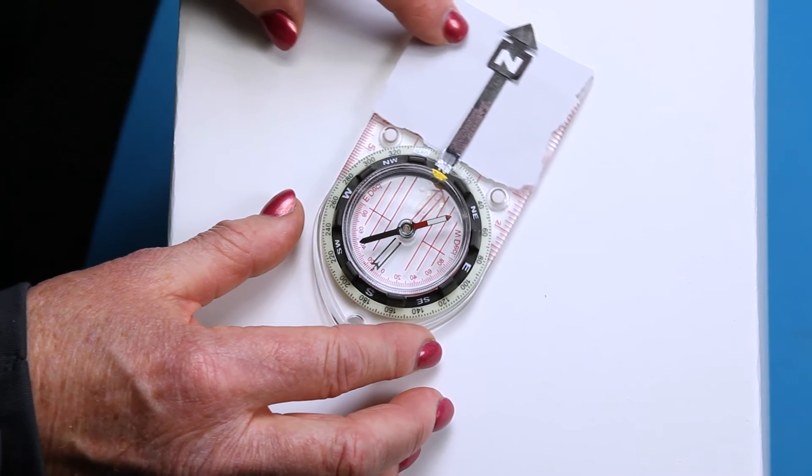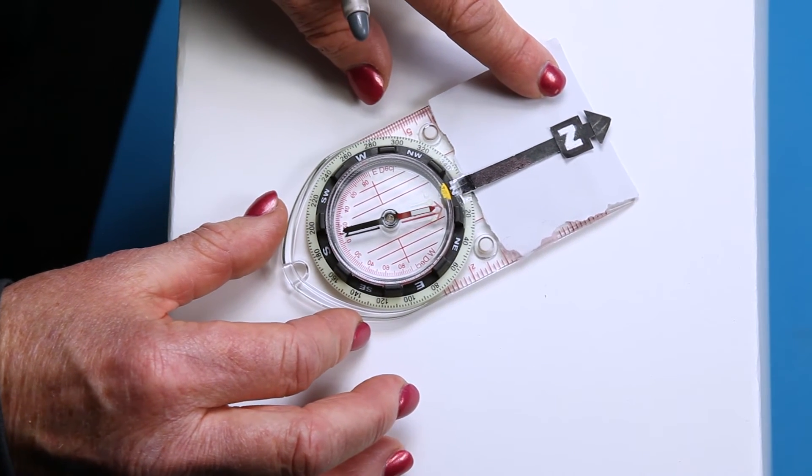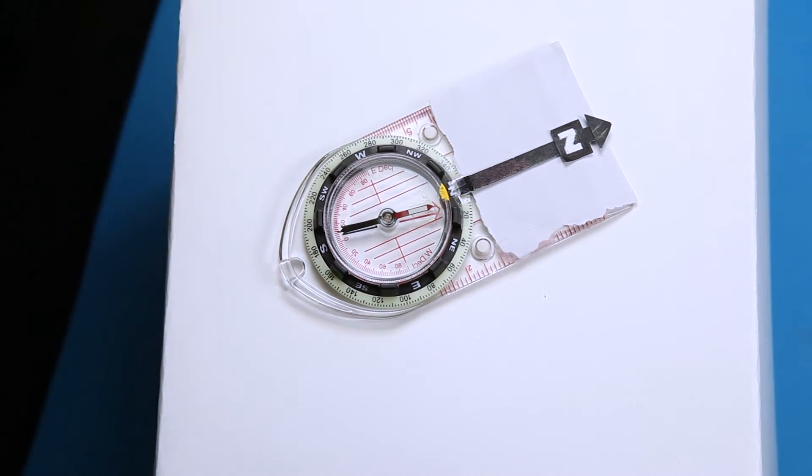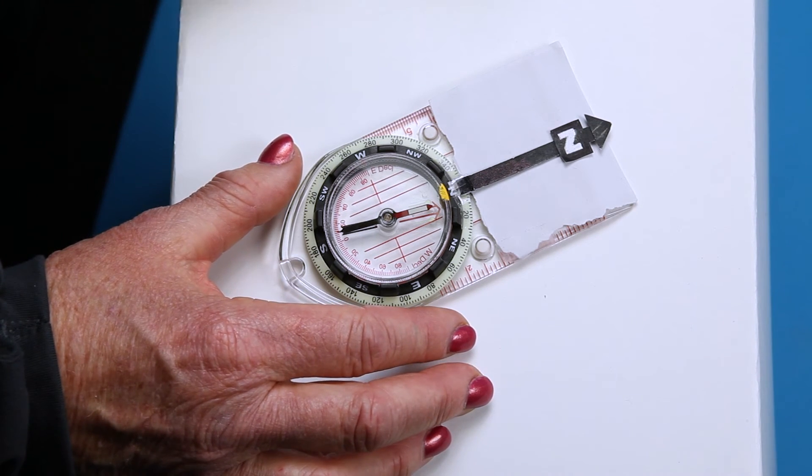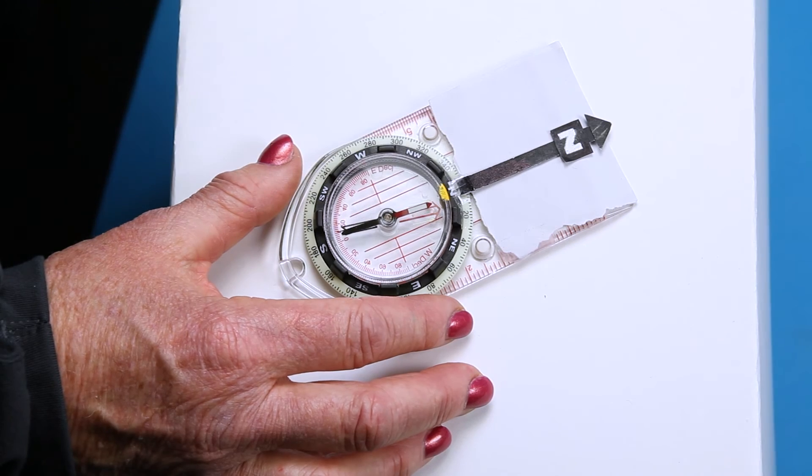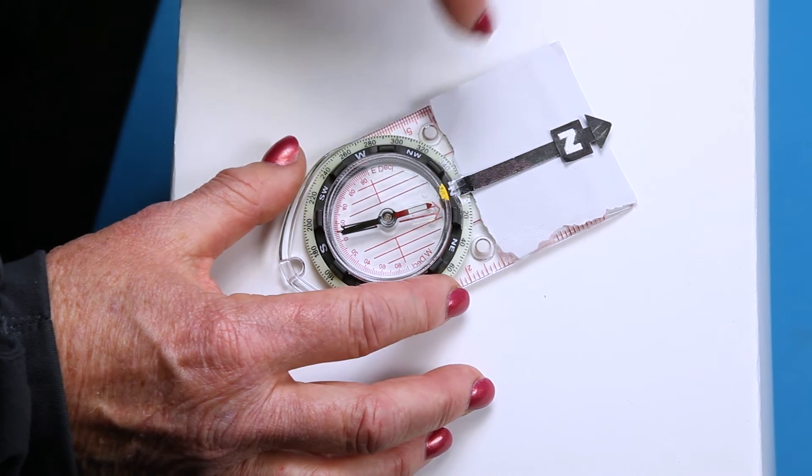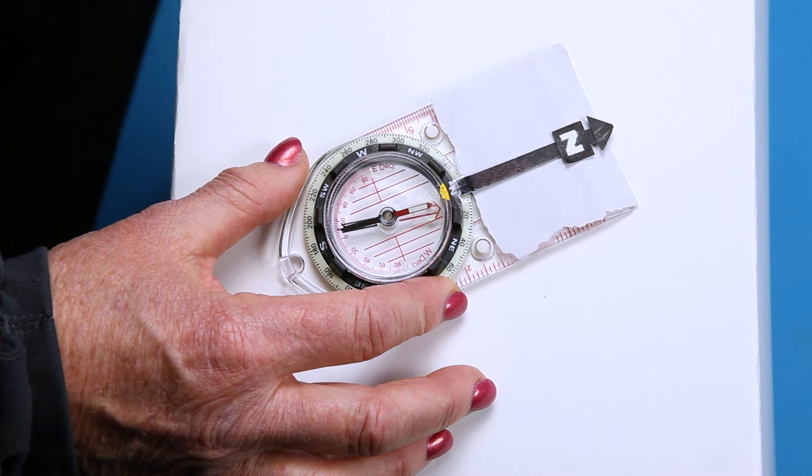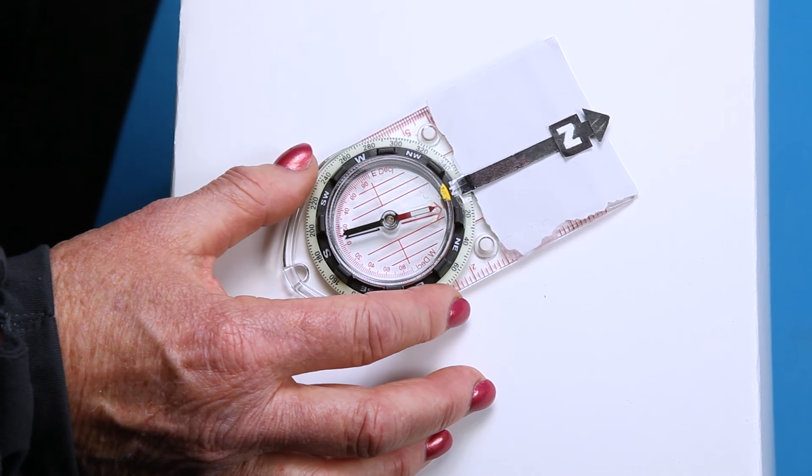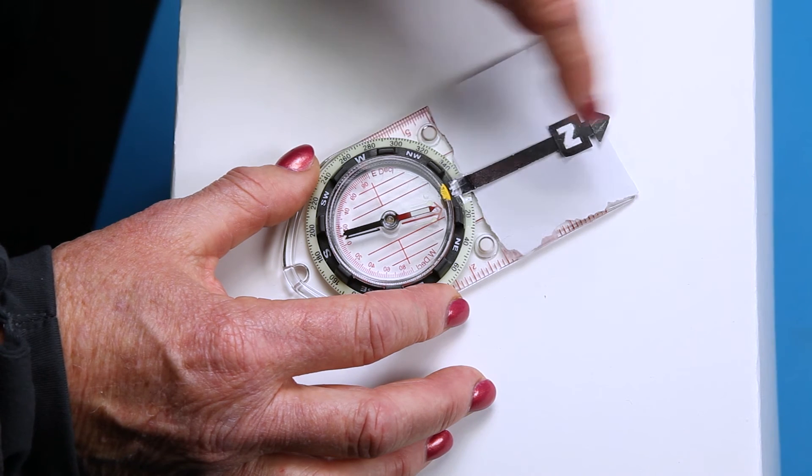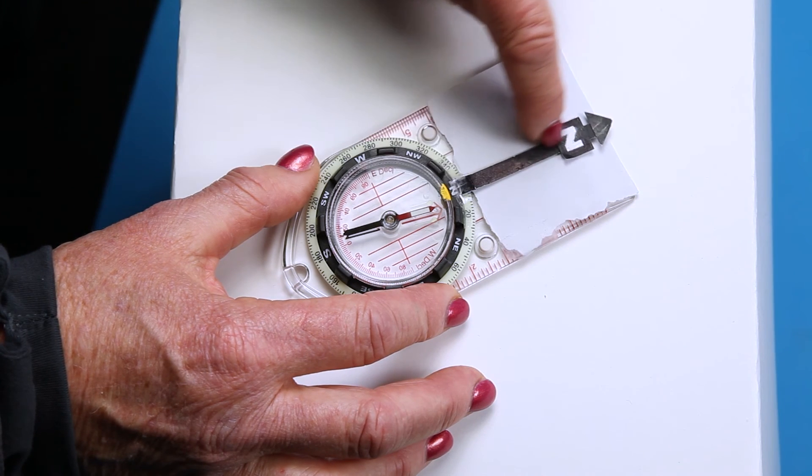Rotate the whole compass until the red end of the orienting arrow lines up with the red end of the needle. We call that trapping the needle or boxing the needle or even putting red in the shed. When the needle is trapped, the N on the ring points in the direction of true North to the North Pole like it's supposed to. See, the magnetic needle doesn't point to North, but it's making the N on the ring point to North.